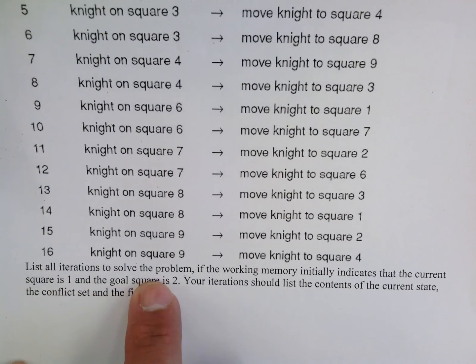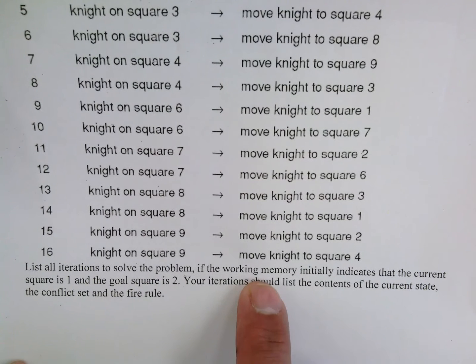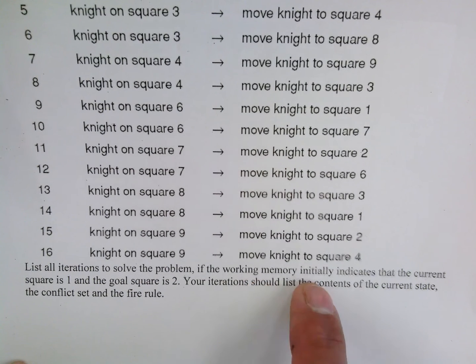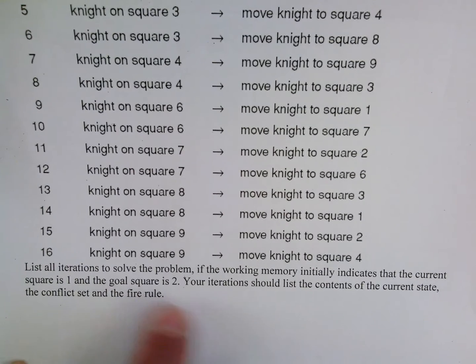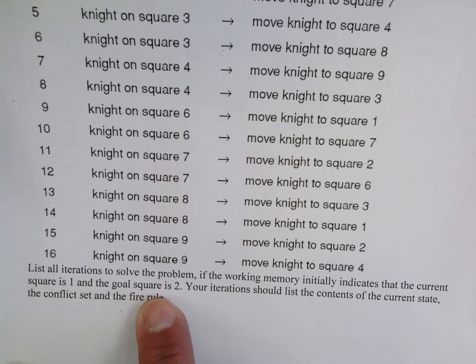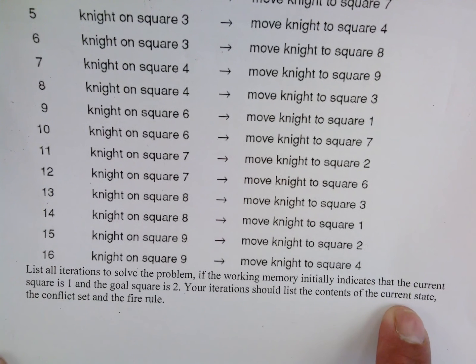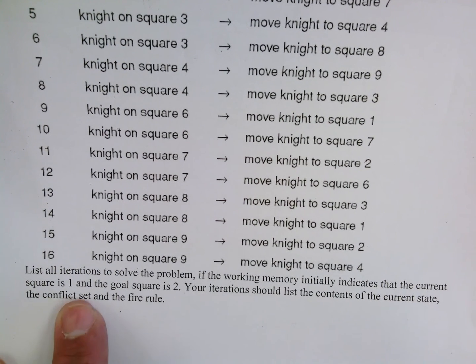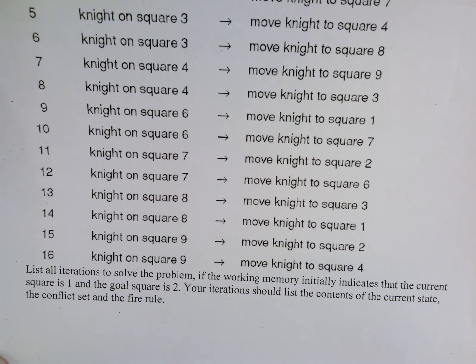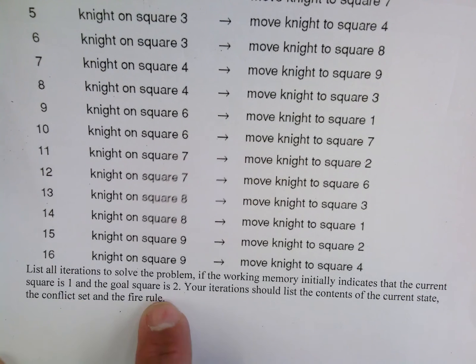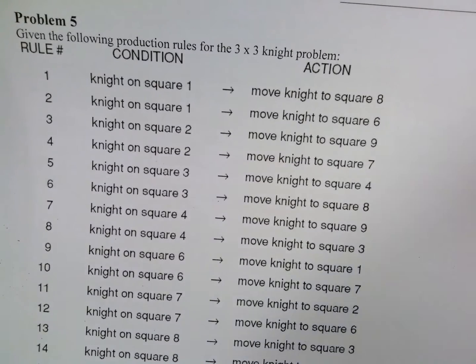In this exercise, we want to show all the iterations to solve the problem. We assume the working memory initially indicates that the current square is one and the goal is to reach square two. We need to track the current state, the conflict set, and which rule we fire each iteration.